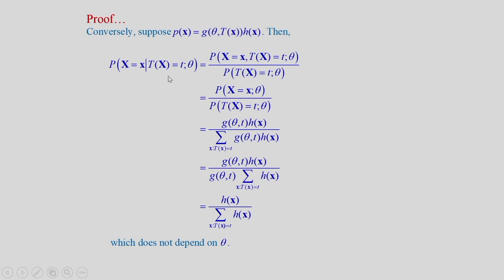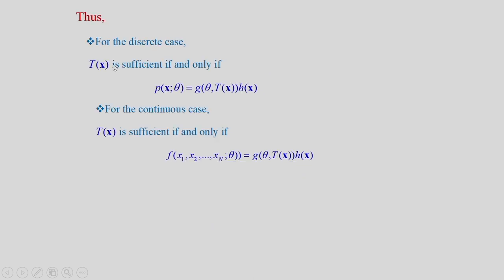So for the discrete case, T(X) is sufficient if and only if the joint PMF is a product of two functions G and H. Similarly, for the continuous case, T(X) is sufficient if and only if the joint PDF is a product of two factors: one a function of theta and T(X), the other simply a function of X.